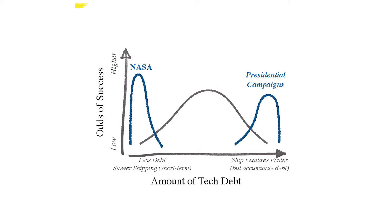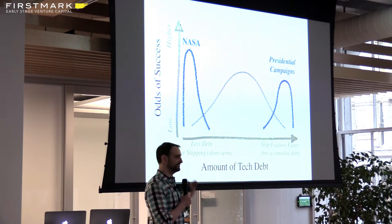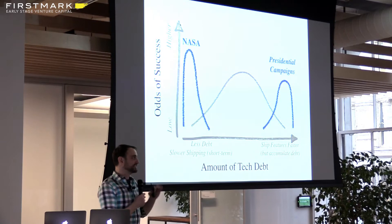Having worked on a presidential campaign one summer, that's actually a wonderful environment for technical debt because you don't care — nothing has to run more than 18 months. On the flip side, you get situations like NASA where a unit conversion error caused the Mars Climate Orbiter to completely crash. So it really is an interesting challenge of figuring out what's the right amount of debt for your environment.